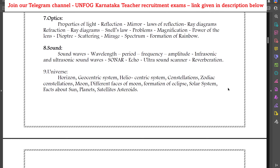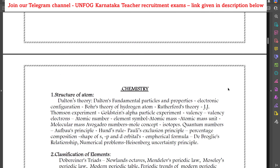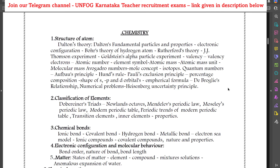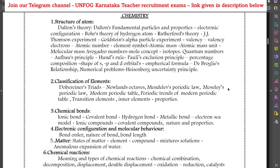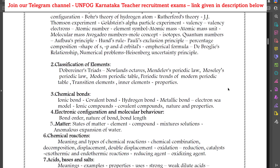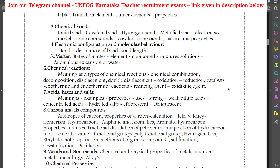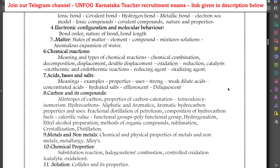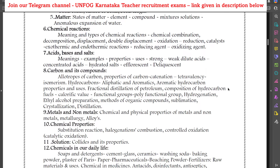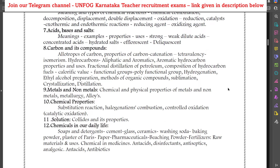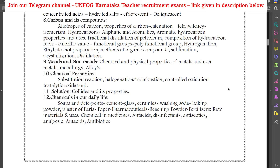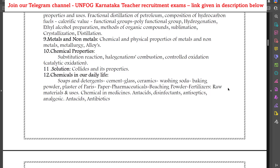Talking about chemistry, we have: structure of atom, classification of elements, chemical bonds, electronic configuration and molecular behavior, matter, chemical reactions, acids, bases and salts, carbon and its compounds, metals and non-metals, chemical properties, solution, and chemicals in our daily life.